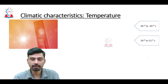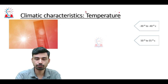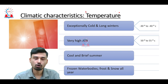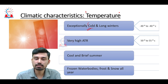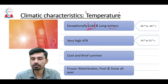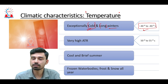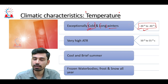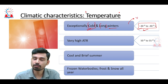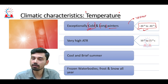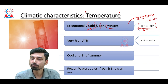The first climatic characteristic to discuss is temperature. Since this region lies in the upper cold temperate latitudes, seasons are exceptionally cold and winters are very long. The average temperature in winter reaches minus 30 to even minus 40 degrees Celsius. In this zone you also find the coldest place on earth with human habitation — Verkhoyansk in Siberia — where winter temperatures can drop as low as minus 62 to minus 65 degrees Celsius.